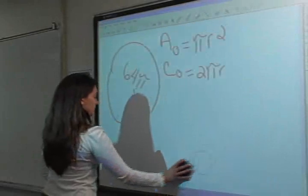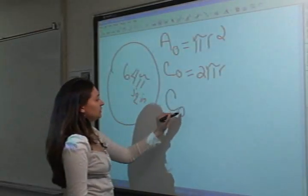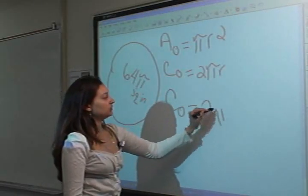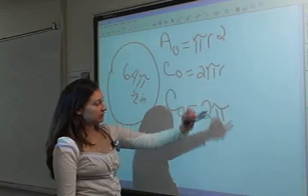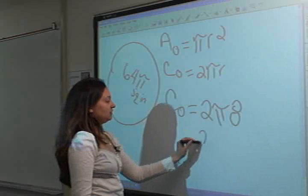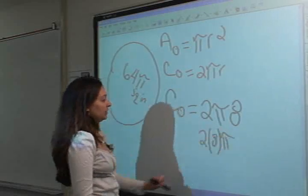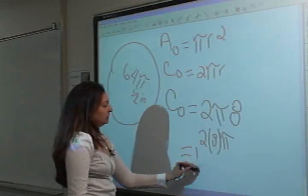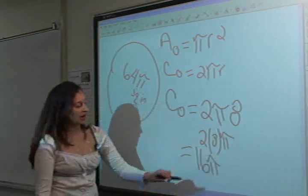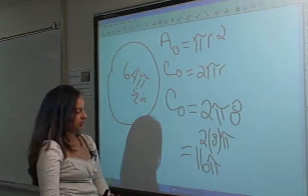Now we are going to plug that into our formula for the circumference of the circle. The circumference equals 2 times pi times our radius, which we remembered was 8. So that's 2 times 8 times pi. You guys all know what 2 times 8 is — that equals 16 pi. We are going to leave this in pi, even though you guys know that pi approximately equals 3.14.